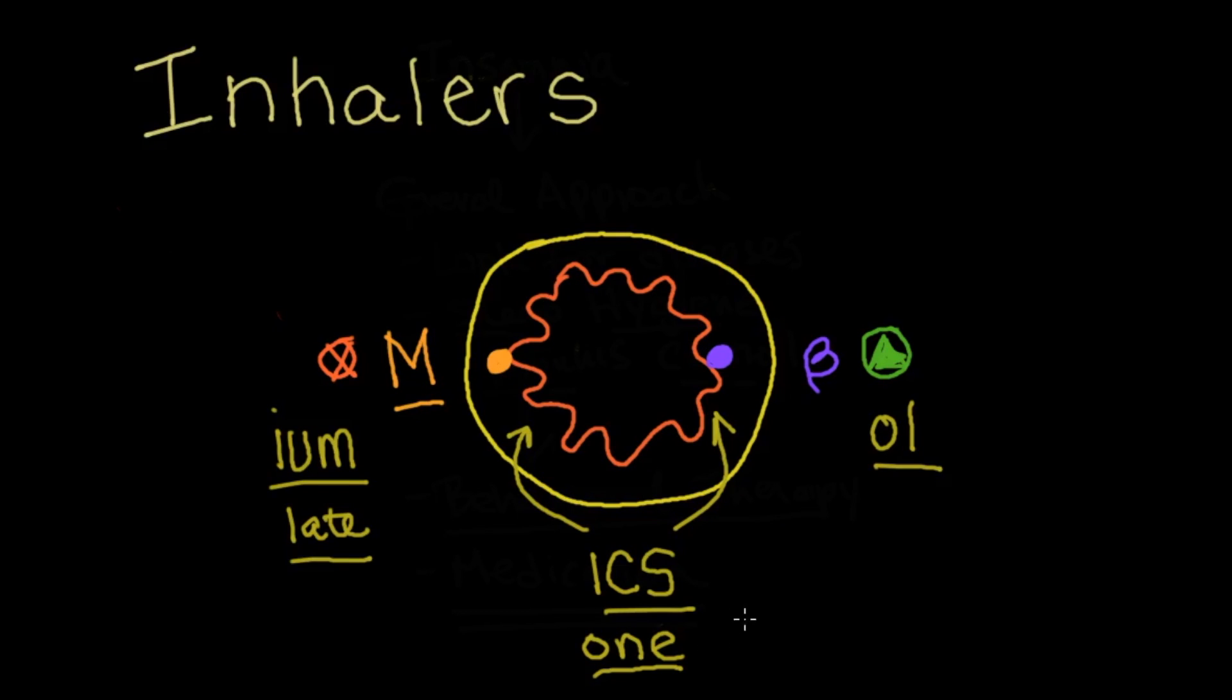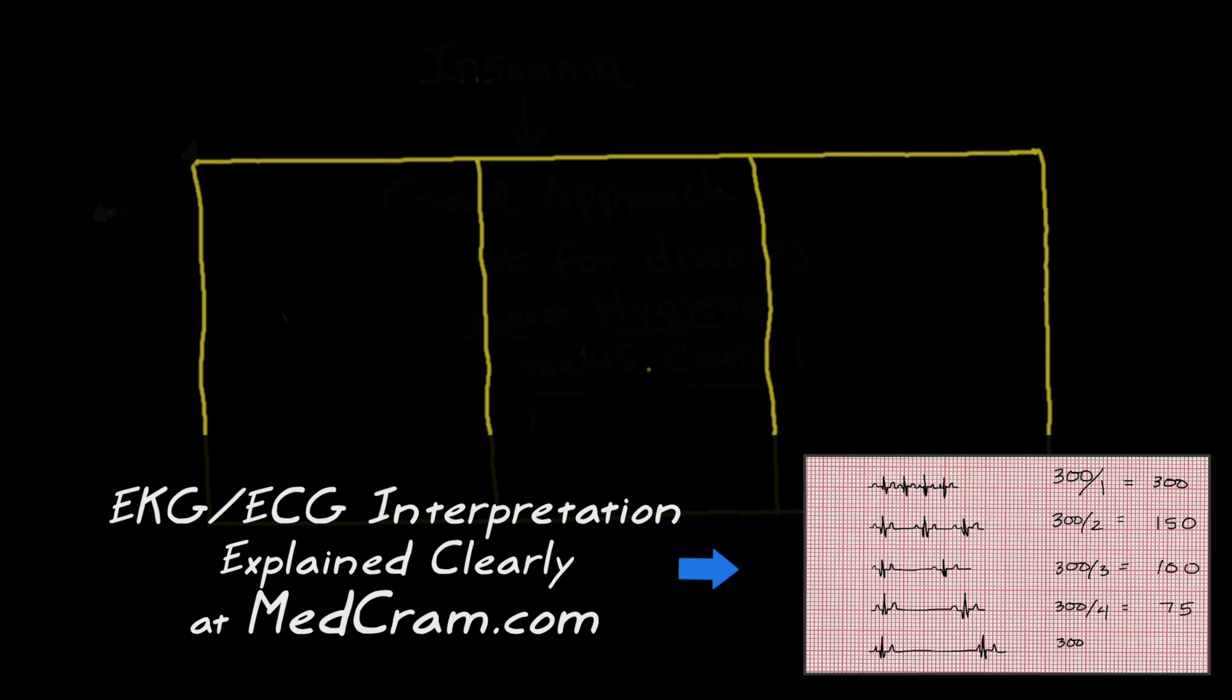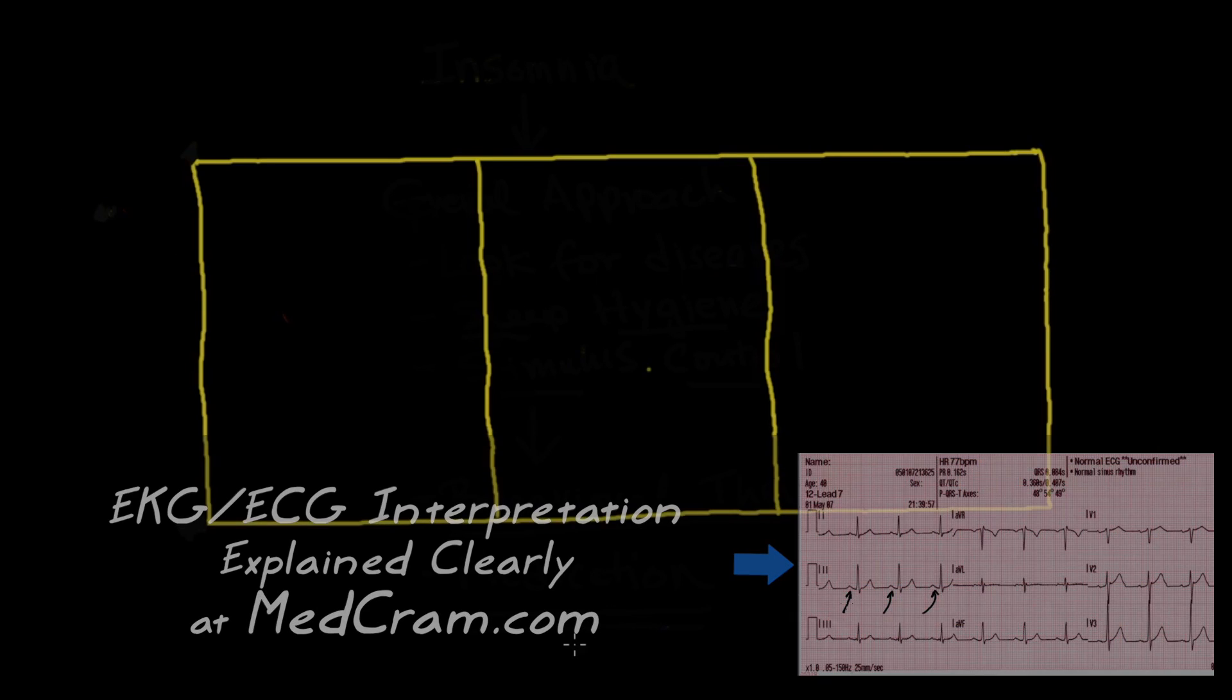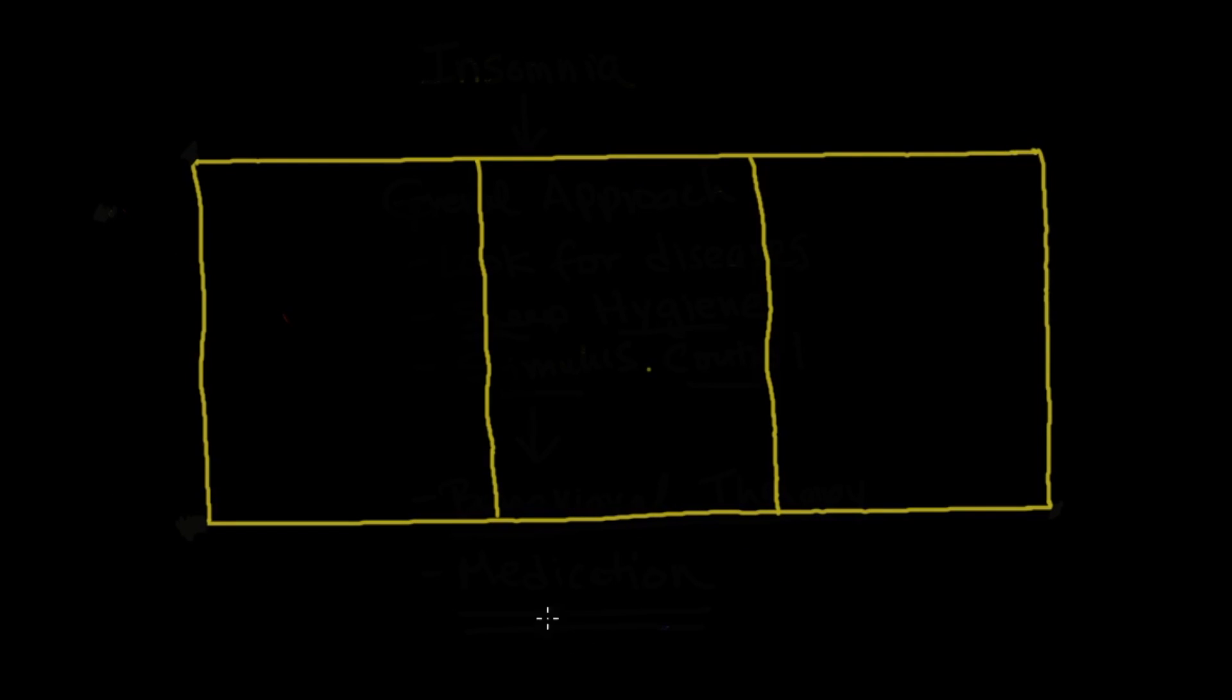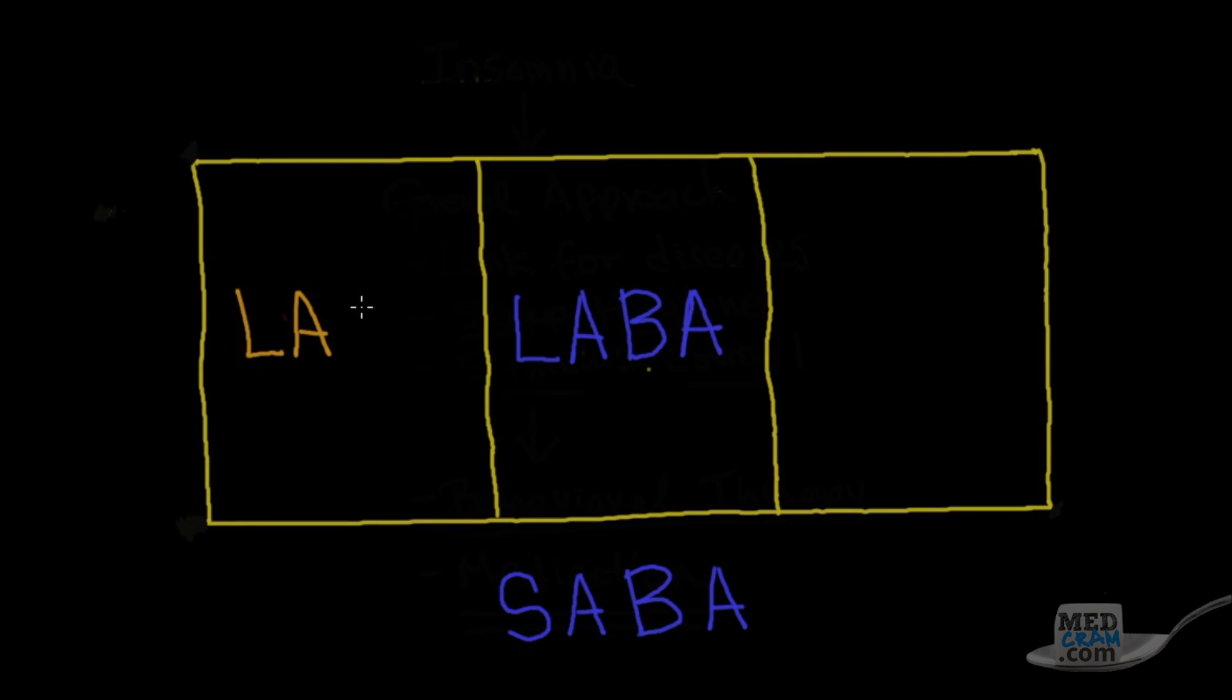So how are we going to use these in terms of the actual clinical outcomes? Let's take a look at that. Let's go ahead and put those medications into the right place. There are two types of beta agonists. There's something called a short-acting beta agonist, which I will call a SABA. This represents things like ProAir, Ventolin, albuterol basically. Now the other one is the long-acting beta agonists, so that's LABA. Then we're going to look at the long-acting muscarinic antagonists, LAMA.